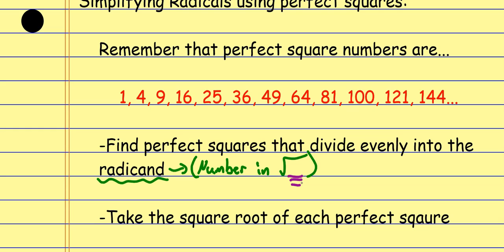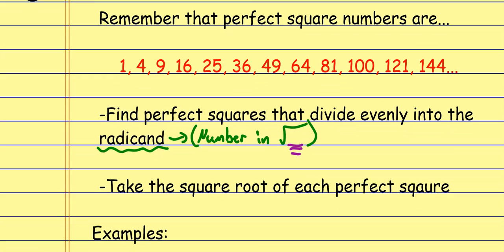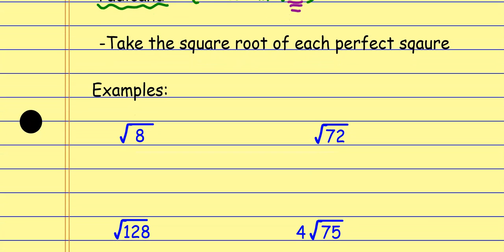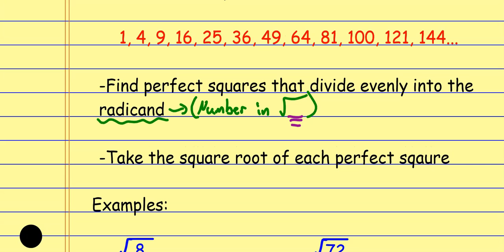We're looking for perfect squares that divide into the radicand, then take the square root of each perfect square. It's really just like those fractions we just did — we take the square root of each thing individually. For example, looking at the square root of 8, I'm looking for perfect squares from the list that divide into 8. You can see right away that 8 is divisible by 4, and 4 is on our list — it's a perfect square.